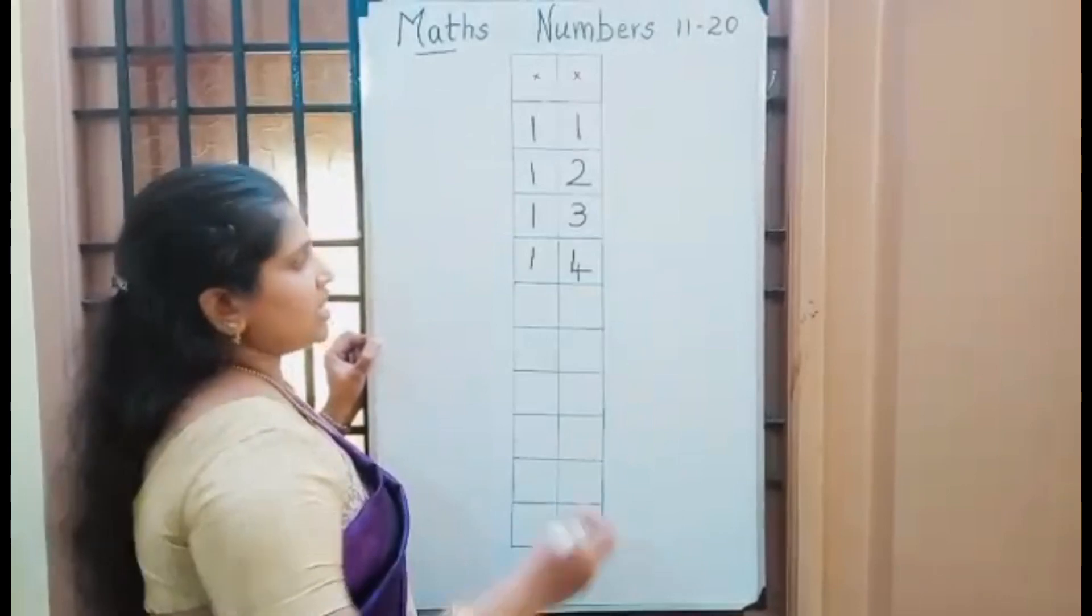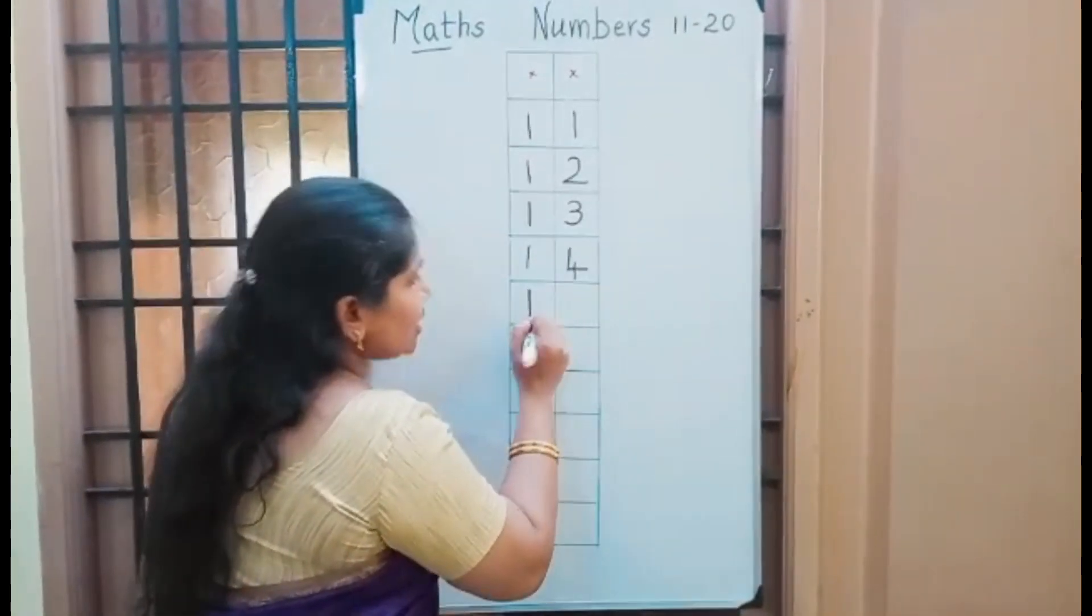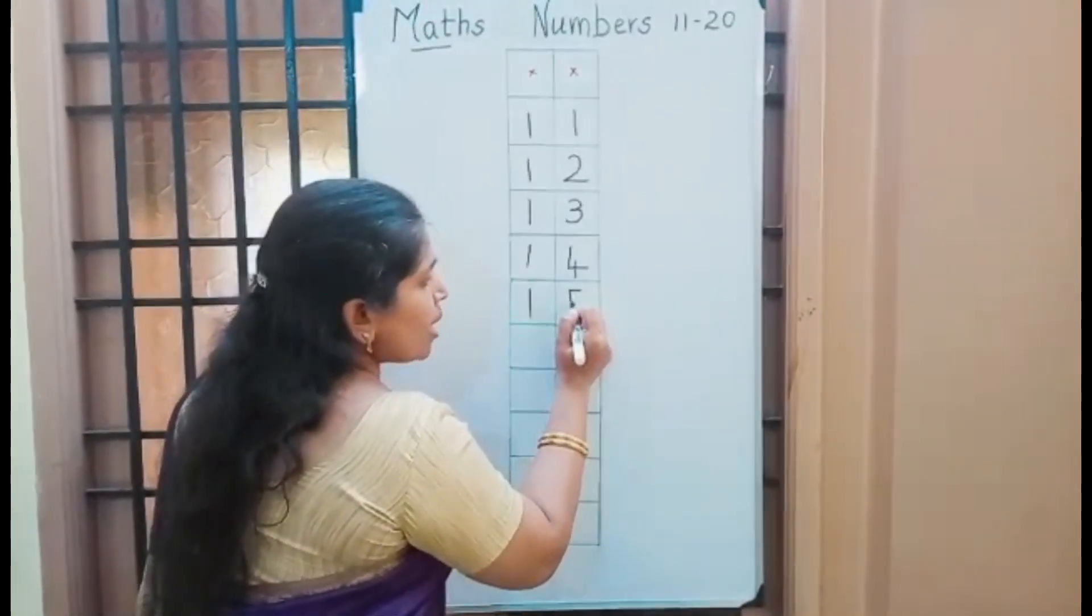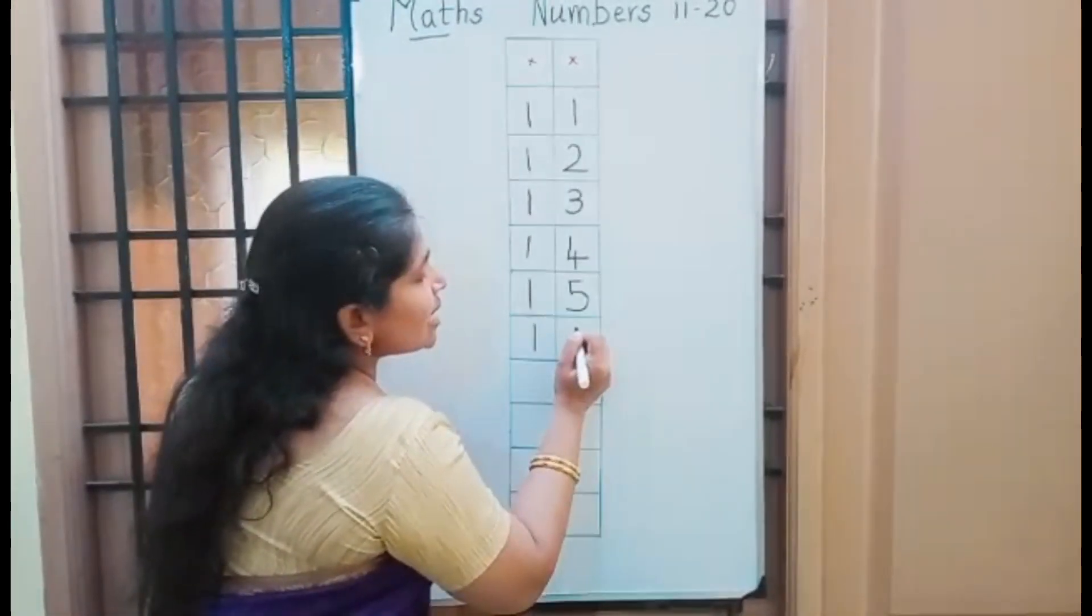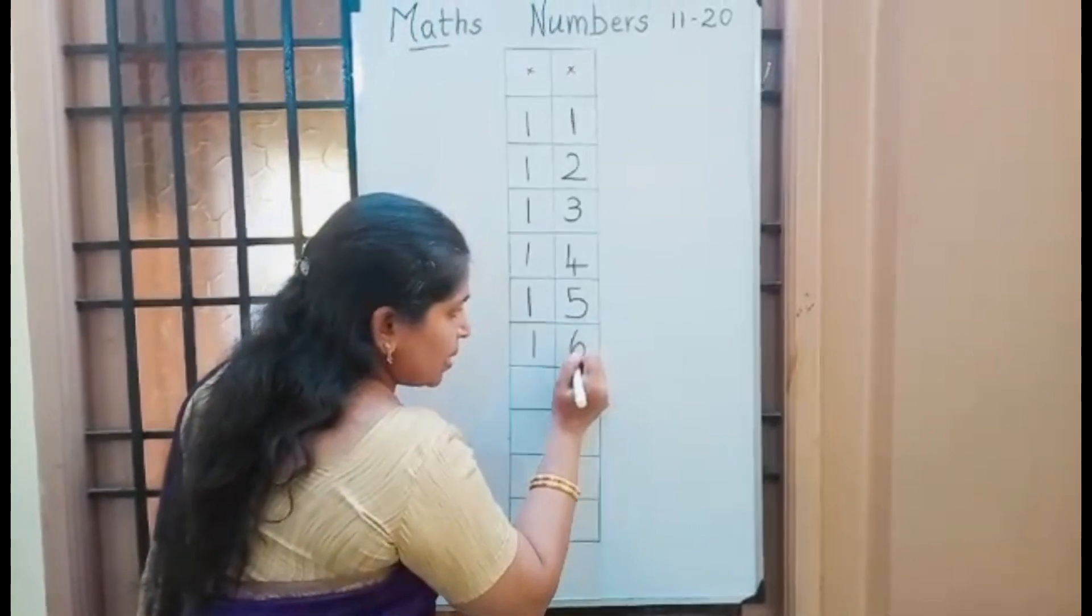1, 5, 15: 1 in 10s place, 5 in 1s place. 1, 6, 16: 1 in 10s place, 6 in 1s place.